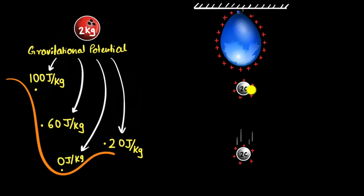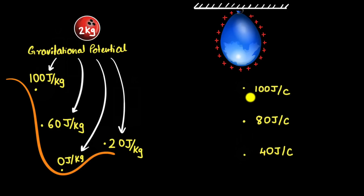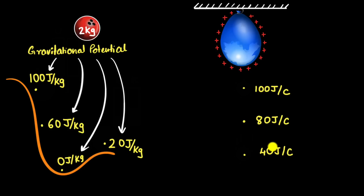You'd say, give me the electric potential energy per coulomb everywhere. If a coulomb is here, the electric potential energy of the system would be 100 joules; over here, it would be 80 joules. When a coulomb goes from here to here, it loses 20 joules of potential energy, gaining 20 joules of kinetic energy. If it were three coulombs instead, it would just be three times that number. These numbers are called electric potential.